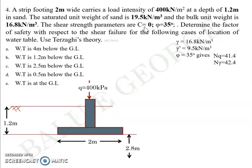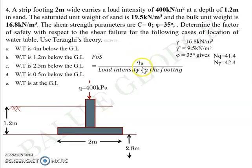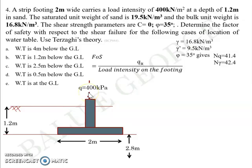The factor of safety is ultimate bearing capacity divided by the load intensity on the footing, which is 400 kPa. So the denominator is already given; we need to find the ultimate bearing capacity (the numerator) for each case.